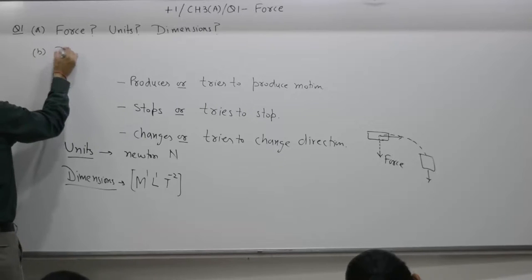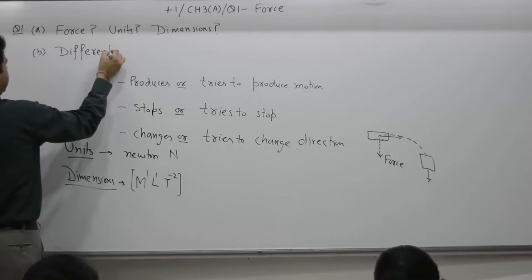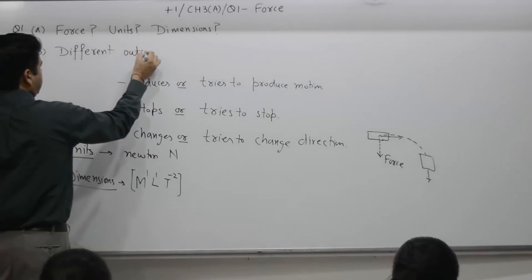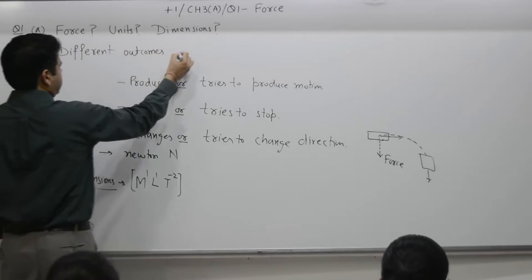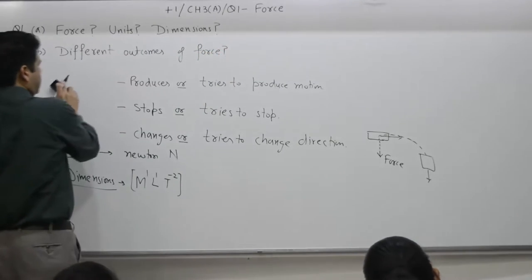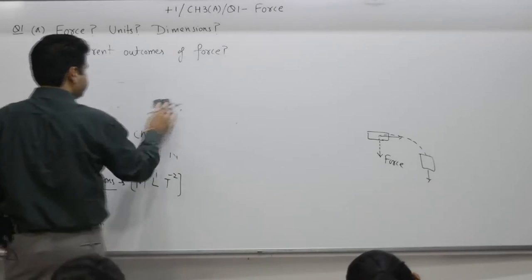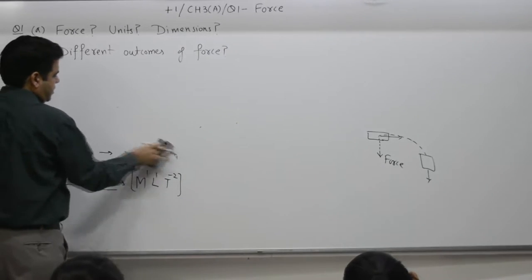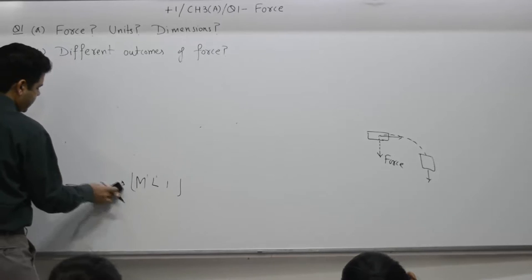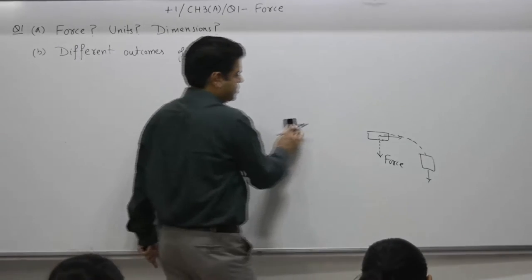B part: different outcomes of force. That means the examples same, three types we have shared, three types of examples. Again we repeat the same, different outcomes, three possibilities.